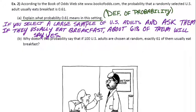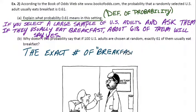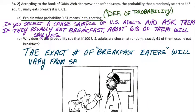And in part B, why doesn't this probability say that if 100 U.S. adults are chosen at random, exactly 61 of them usually eat breakfast? Why doesn't it say that? Well, the big takeaway here is it doesn't talk about exact measurements. Like, if you get exactly 100, you'll get exactly 61 to say yes. The reason behind that is that the exact number of breakfast eaters, what will it do? Well, you're talking about just any sample of 100 adults? Well, it'll vary. The exact number of breakfast eaters will vary from sample to sample. So, you can't say that for sure about just any sample of 100 U.S. adults. That's the point.